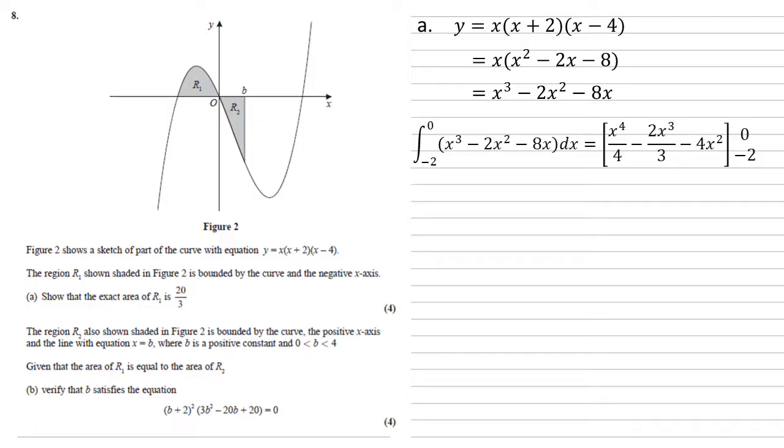When we integrate x's to powers we raise the power by 1 and divide through by the new power. So x cubed, raise the 3 up to a 4, divide through by 4. 2x squared, the 2 goes up to 3, we divide through by the 3. And 8x, well that's 8x to the power of 1, so we raise that up to x squared and divide through by the 2. So we get x to the power of 4 over 4 minus 2x cubed over 3 minus 4x squared. Again this is between minus 2 and 0.